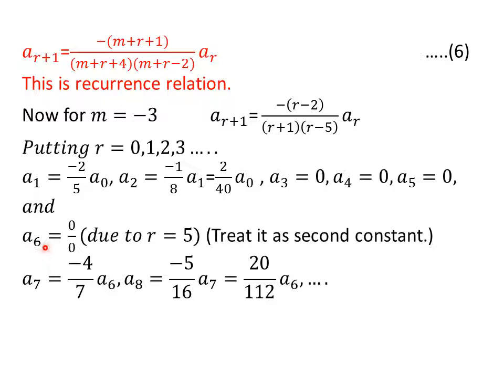Now come to a six. This is very important step. See it carefully. When we put r equal to five in equation six, we get the denominator as zero and since a five was zero, the numerator also becomes zero. Numerator is zero because a five is zero and denominator is zero because r equal to five. Hence, a six is indeterminate.